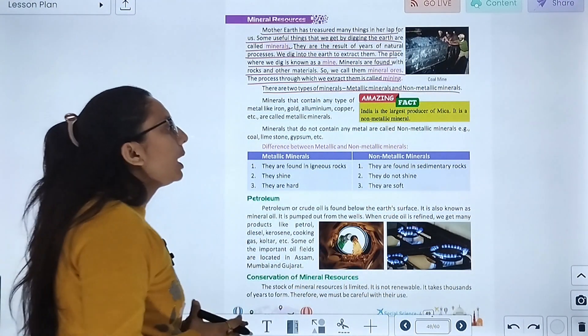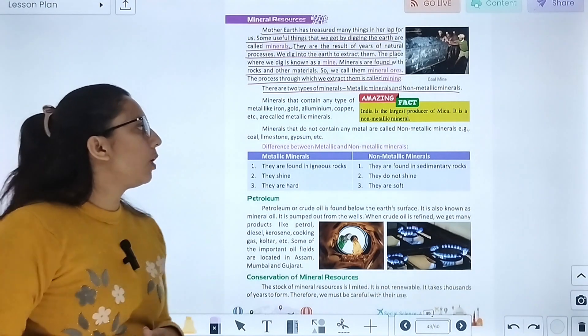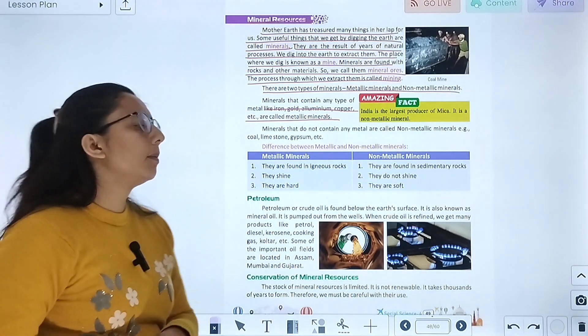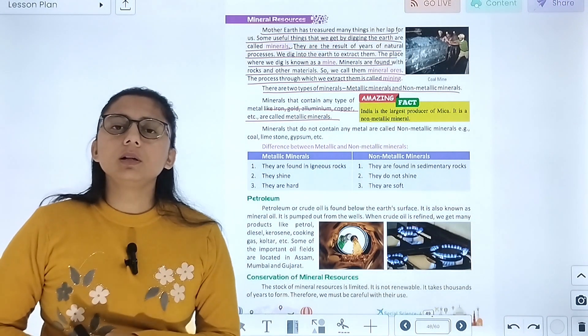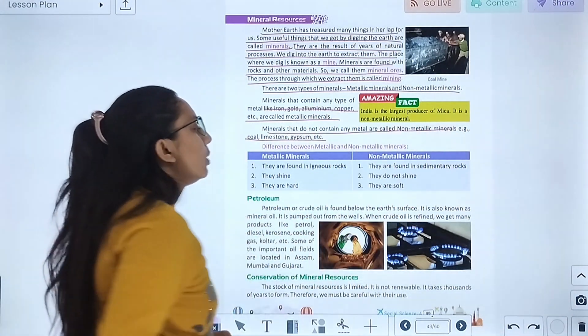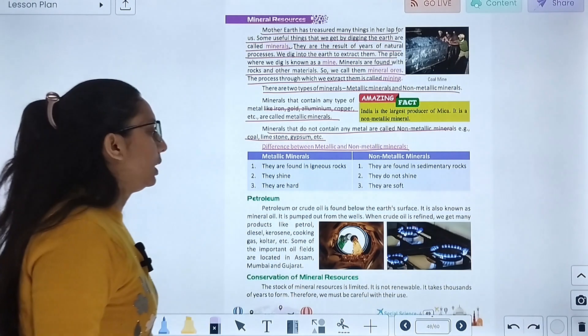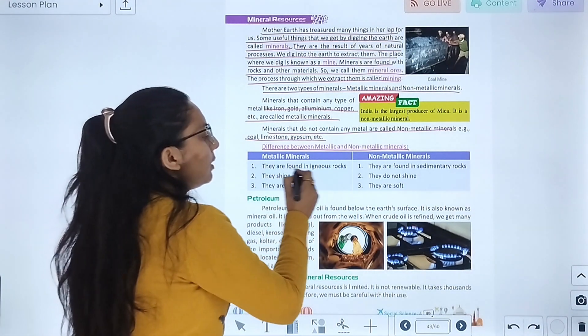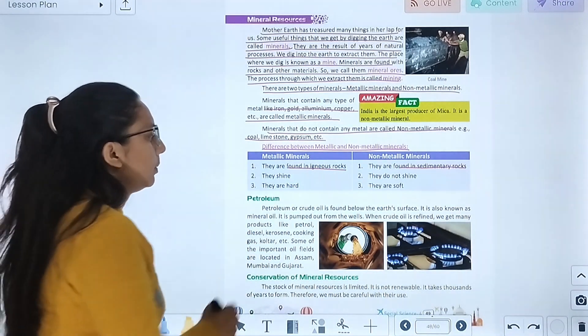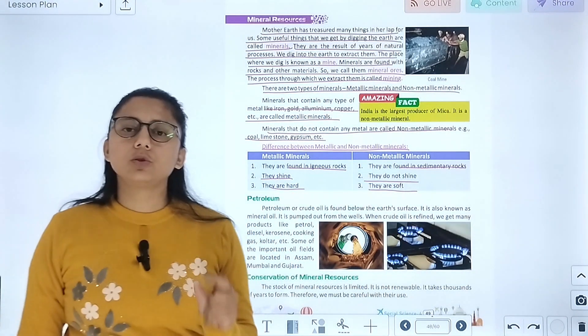There are two types of minerals: metallic and non-metallic. Metallic minerals are found in igneous rocks while non-metallic minerals are found in sedimentary rocks. Metallic minerals shine and are hard, while non-metallic minerals do not shine and are soft.